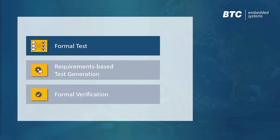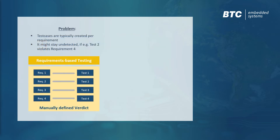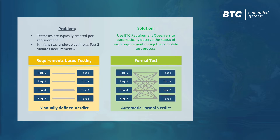Let's start with formal test. In a traditional requirements-based testing approach, each test case is only checked against the requirement from which it is derived. But what if test case number two violates requirement number four? Thanks to formal test, all formalized requirements are automatically checked against every simulation.